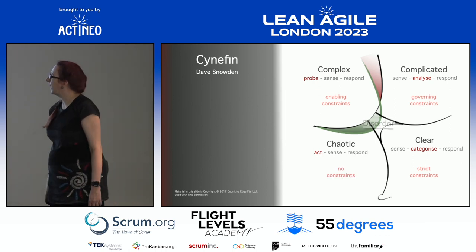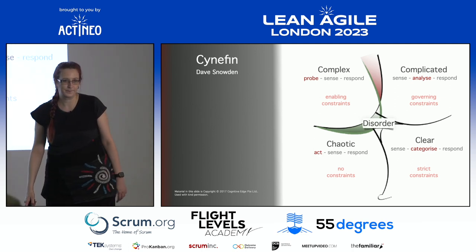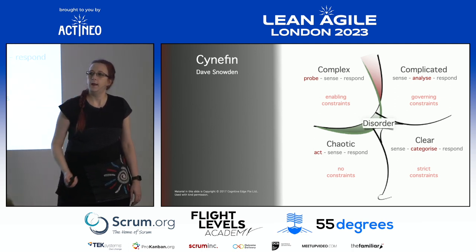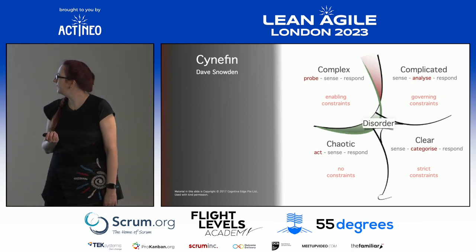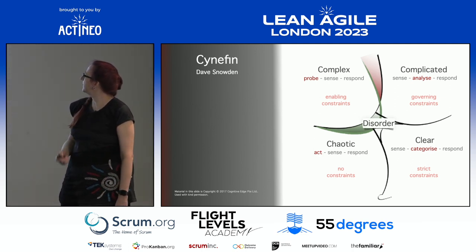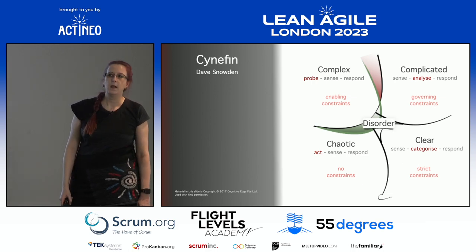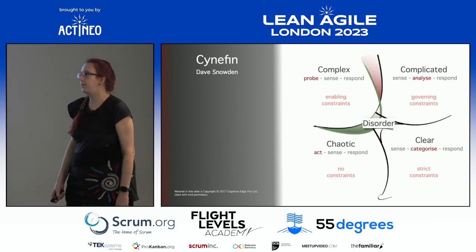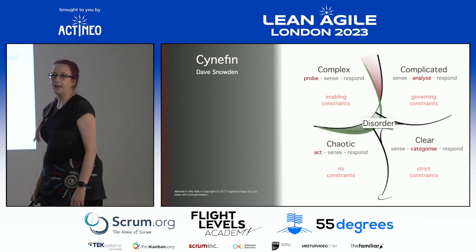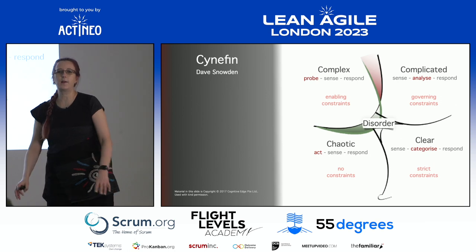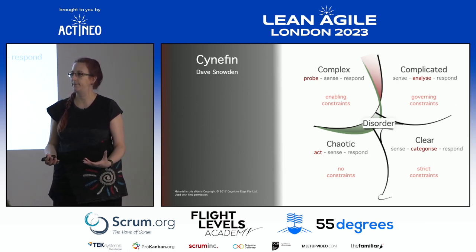In chaos we have no constraints at all. In the middle is the domain of Disorder — where we don't know which domain dominates, so we behave according to our preferred domain.